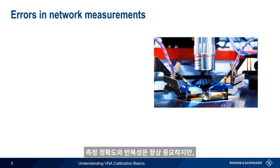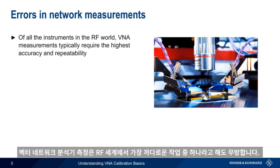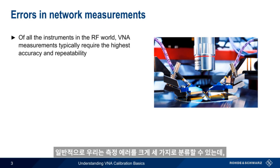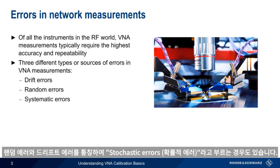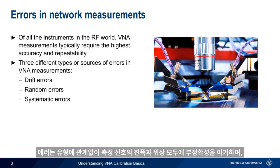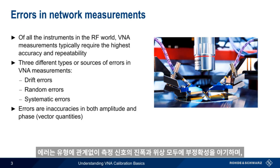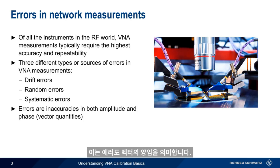Measurement accuracy and repeatability are always important, but it's fairly safe to say that vector network analyzer measurements are among the most demanding in the radiofrequency world. Generally speaking, we can classify measurement errors into three main categories, namely drift errors, random errors, and systematic errors. You may also hear random errors and drift errors collectively referred to as stochastic errors. Regardless of type, errors cause inaccuracies in both the amplitude and the phase of measured signals, which means that errors are also vector quantities.